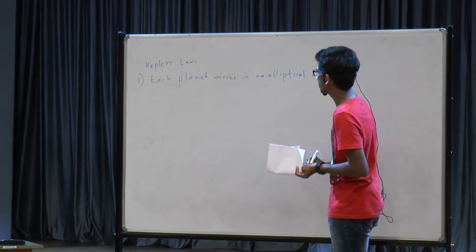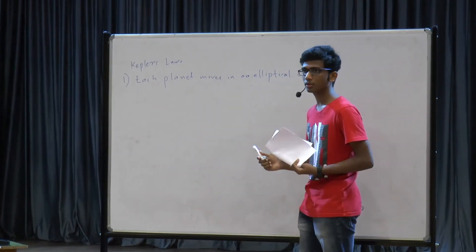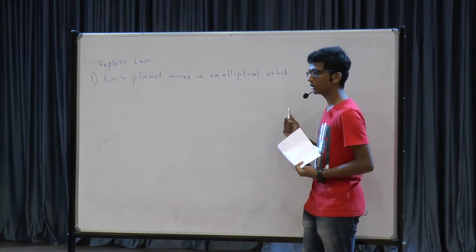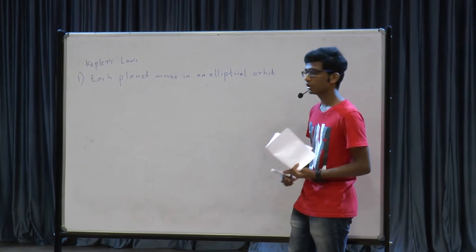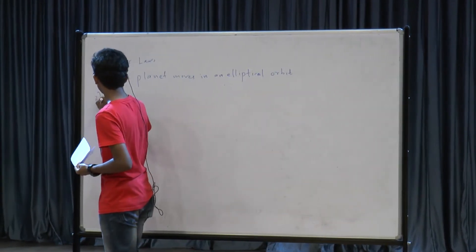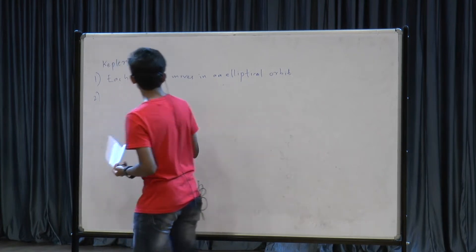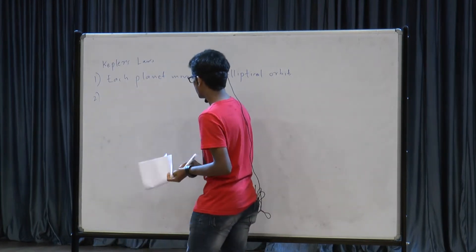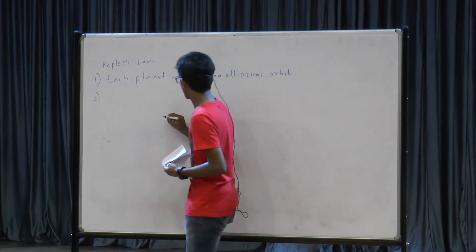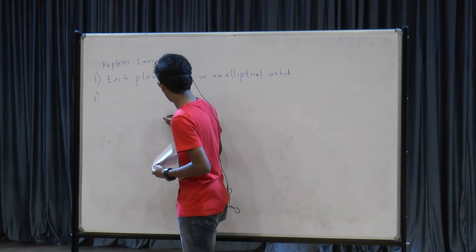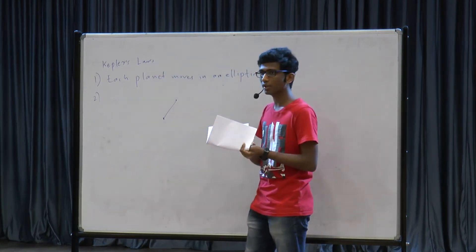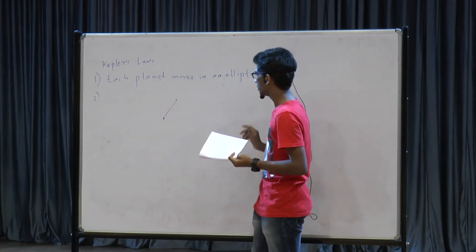The first law says that each planet in our solar system moves around the Sun in an elliptical orbit. The second law says that the vector from the Sun to the planet sweeps equal areas in equal time.